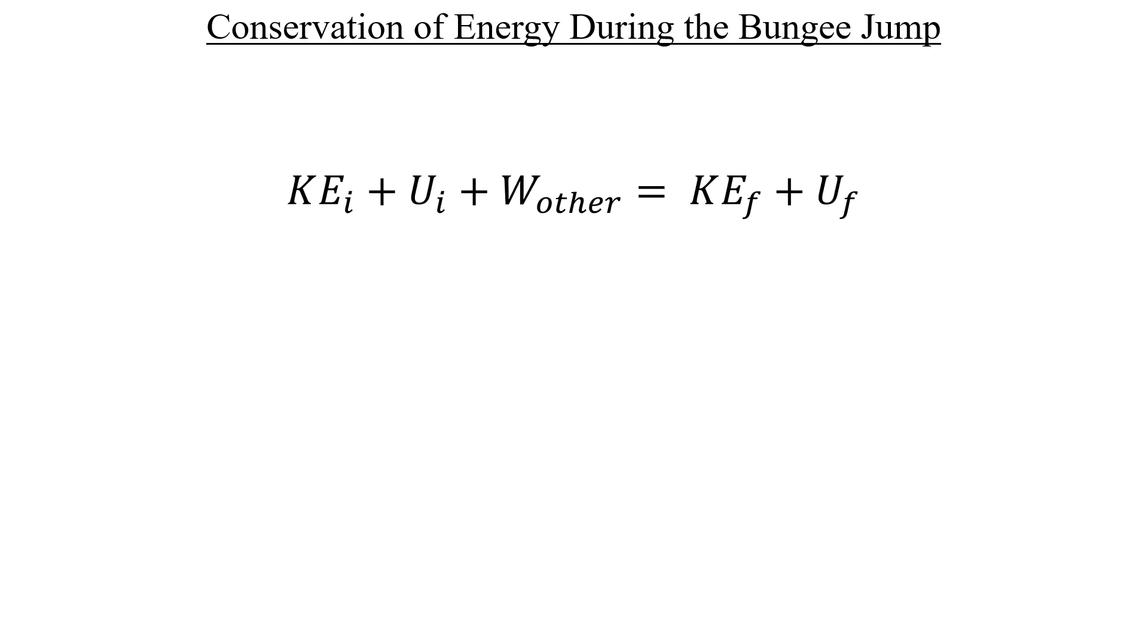Before our father-in-law steps off the platform, he isn't moving. Thus, the initial kinetic energy has to be 0. The same would be true at the bottom of the bungee jump where he safely stops. So we can set the final kinetic energy to 0 as well.